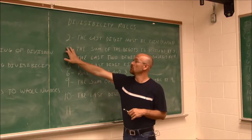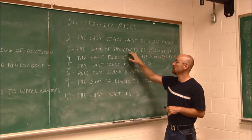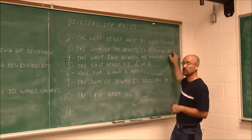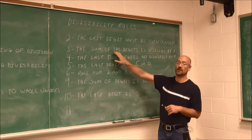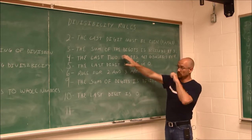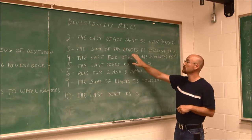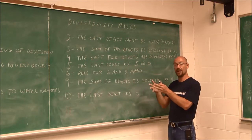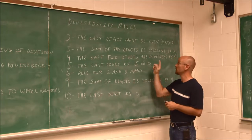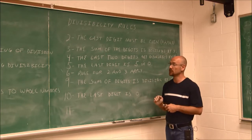For the divisibility rule for 3, if the sum of the digits is divisible by 3, then the number itself will be evenly divisible by 3. What I mean by the sum of the digits is we take each digit and add them up. If that final sum is divisible by 3, then the whole number is going to be divisible by 3.